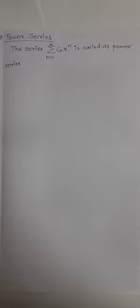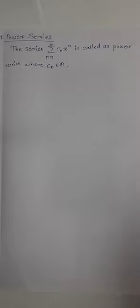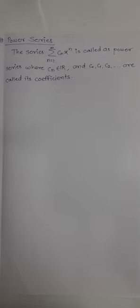Here cₙ means c₁, c₂, c₃ — all these are real numbers, and we call them the coefficients of the power series. Now let us expand this series and see how it looks.